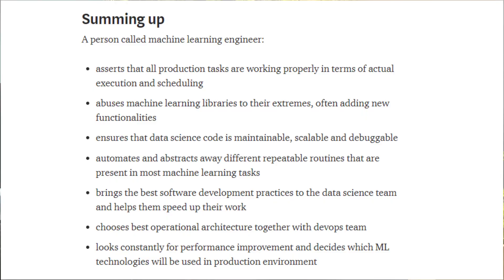The description of a data scientist is going to vary substantially depending on who's creating a job listing, and so is an ML engineer. The most thorough definition of an ML engineer I found comes from a Medium article by Tomasz Dudek, himself an ML engineer. He described a machine learning engineer as somebody who asserts that all production tasks are working properly in terms of execution and scheduling, abuses machine learning libraries to their extremes often adding new functionalities, ensures that data science code is maintainable, scalable, and debuggable, automates repeatable routines in most ML tasks, brings the best software development practices to the data science team, chooses best operational architecture with the DevOps team, and looks for performance improvement and decides which ML technologies will be used in production.